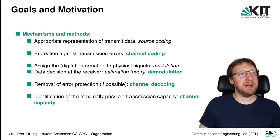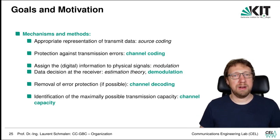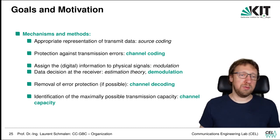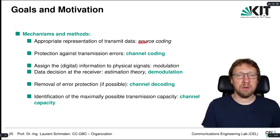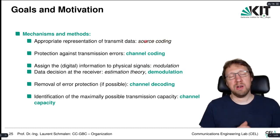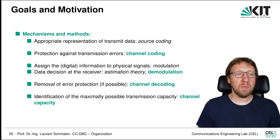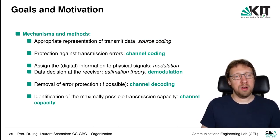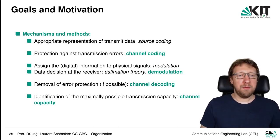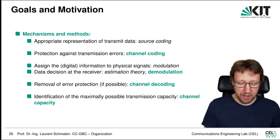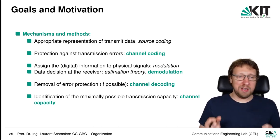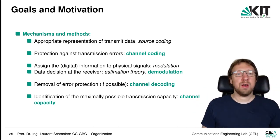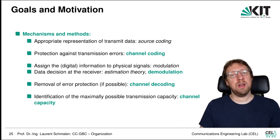What mechanisms and methods do we use in communication engineering? We have seen several already in Communication Engineering 1. The first is to represent the data accordingly using source coding, which generates a digital version of our data best suited for transmission. We have a separate lecture on source coding, which is why we don't go into detail here. What we are looking at in this lecture is the protection against transmission errors, which is based on channel coding.